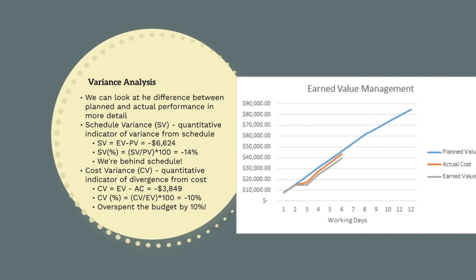Cost variance is a quantitative indicator of our divergence from our cost baseline — so how much should we have spent and how much have we actually spent? This gives us an indication of our financial performance. CV is the difference between earned value and actual cost. We can see from our project that this is negative $3,849, meaning we have overspent the budget by almost $4,000. As a percentage, we divide CV by our EV and we can see that we have overspent the budget by almost 10%. Cost variance and schedule variance are simple and quick calculations that we can make to present an accurate and objective figure as to project performance. We can objectively quantify how we are performing both in terms of time and money compared to how we originally said we would.